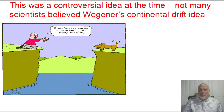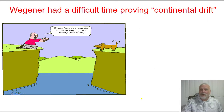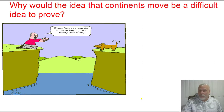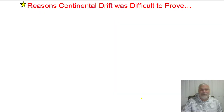Wegener's idea of continental drift at the time was actually quite controversial. Not many scientists at that time believed him — a lot of them thought that he was way off and kind of crazy. Wegener had a difficult time proving his idea of continental drift. Why would the idea that continents move be a very difficult idea to prove? A couple of big reasons why continental drift was difficult to prove.